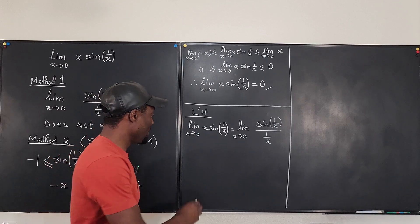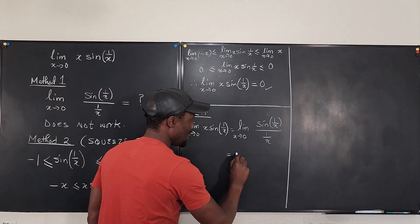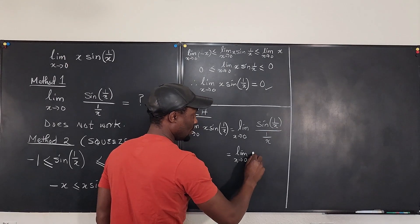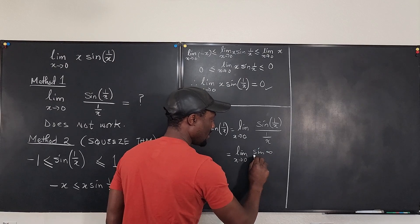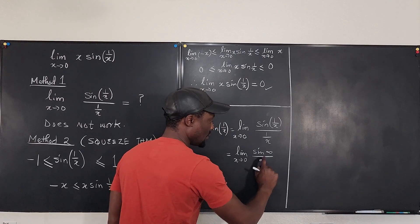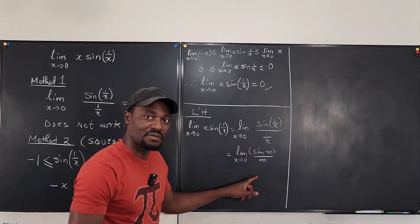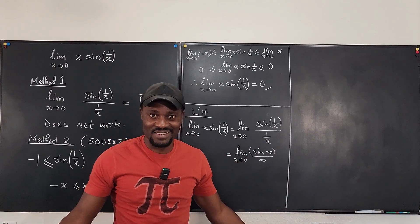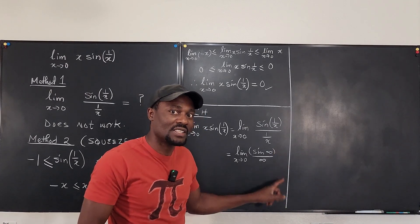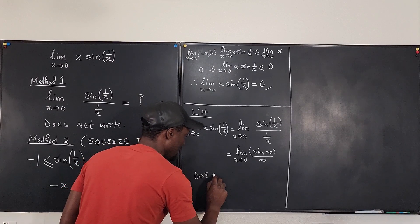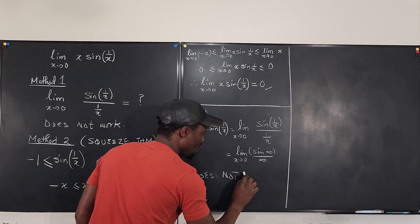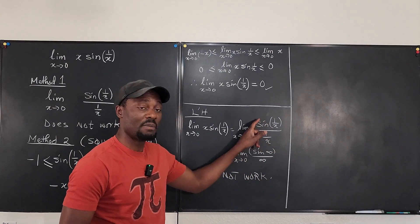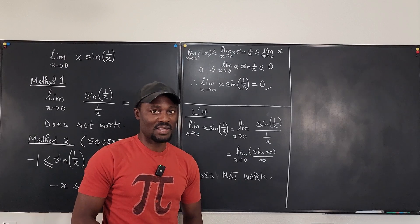L'Hôpital's rule does not work because sine of infinity is not infinity — it just doesn't exist. You don't use L'Hôpital's rule in that case. If this were infinity over infinity, we'd differentiate the top and the bottom and plug in to get our answer. But it's not going to work here.